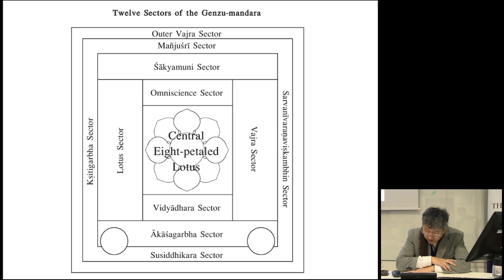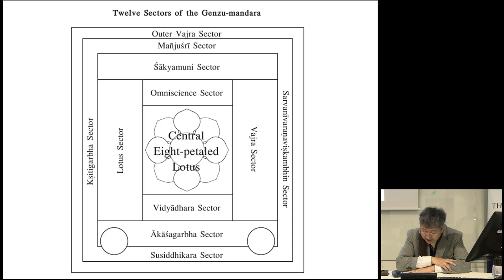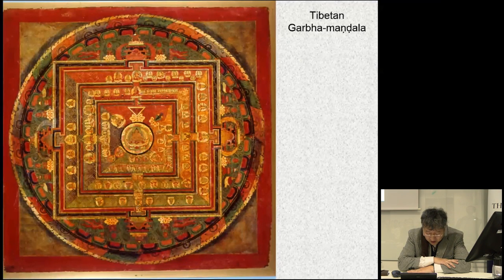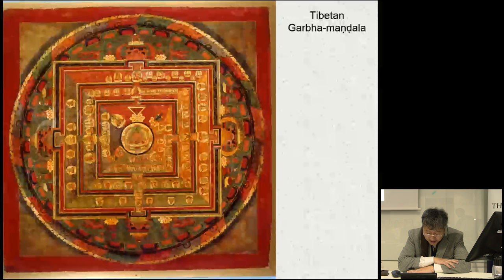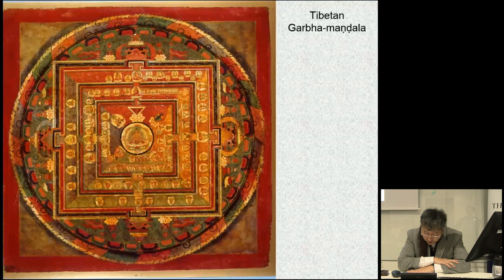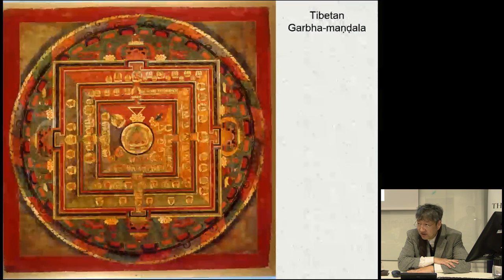Compared with the approximately 120 deities mentioned in the Vairocana Abhisambodhi Sutra, this represents a more than threefold increase in the number of deities. The Tibetan Garbha Mandala, on the other hand, consists of around 120 deities, following the Indian original more closely than the Sino-Japanese Genzui Mandala.